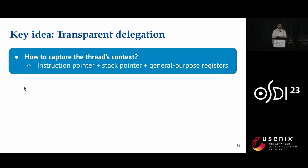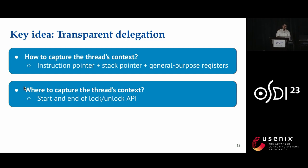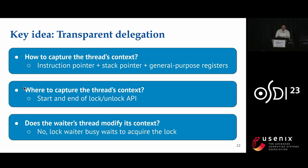To solve the first question, we rely on the fact that the thread context at any point in time is well-defined by the hardware — it consists of the instruction pointer, stack pointer, and general-purpose registers defined by the architecture. Using these registers, we can capture the thread context. To solve the second question, the start and end of the critical section is well-defined by the lock and unlock API, so capturing the thread context at the start of lock and end of unlock captures the critical section. To solve the third question, we observe that in existing lock designs, the waiter thread busy-waits to acquire the lock and is not modifying its context. We leverage this fact to transparently delegate the critical section of the waiter in the lock API while the waiter thread is busy waiting.